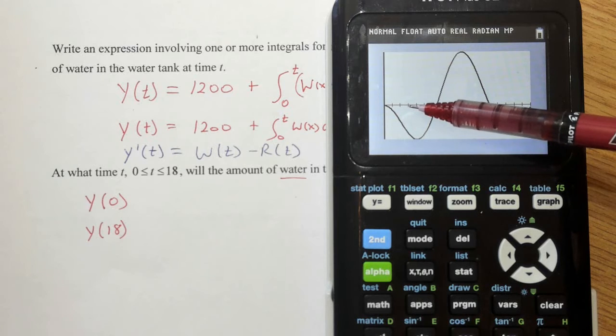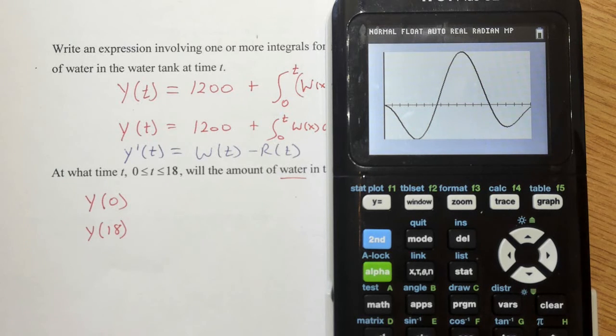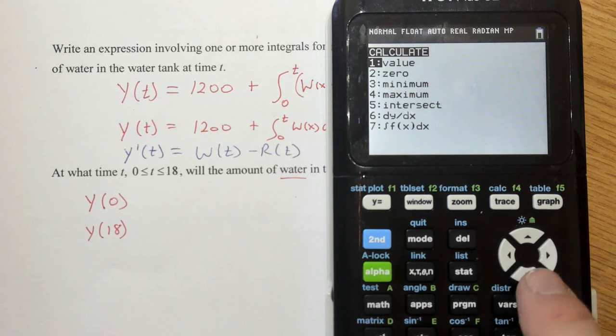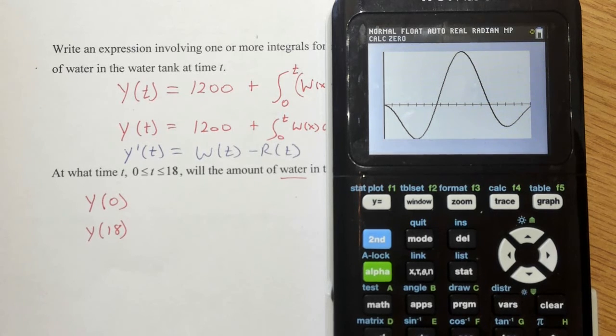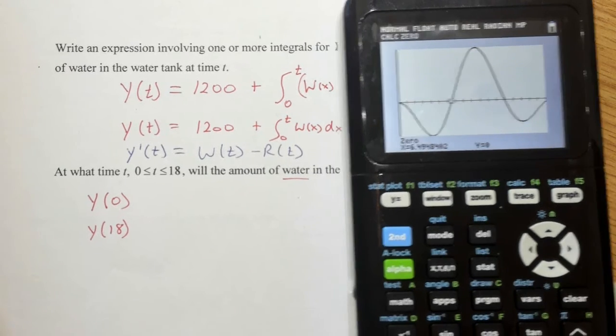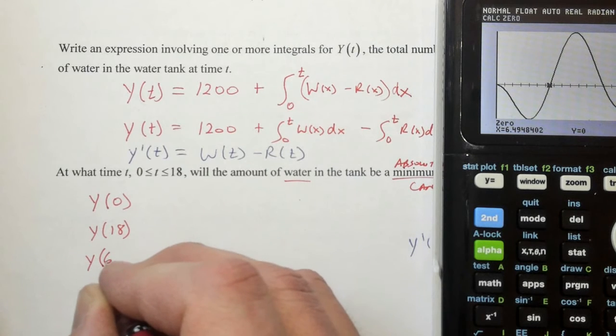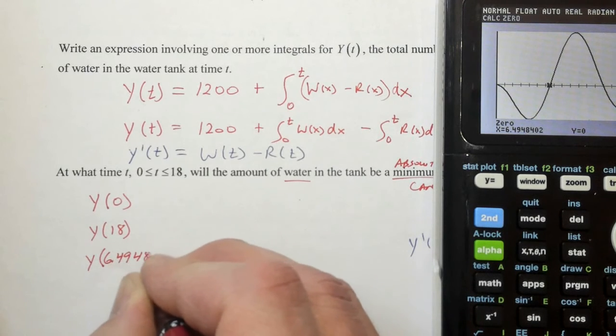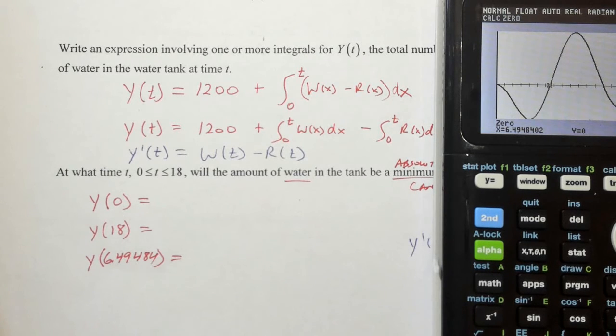So let's find that value. So counting the tick marks, one, two, three, four, five, six, this seems to happen between six and seven. So we're going to do a zero finder, second, trace, and our zero finder, and we know it happens between six and seven, and we can guess, whatever, 6.5, and the calculator will think for a second, and boom, there's our answer, 6.49484. That is our third candidate, all right, 6.49484. So we need to evaluate Y at these three points.